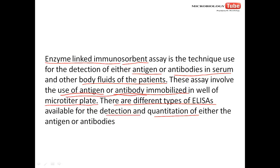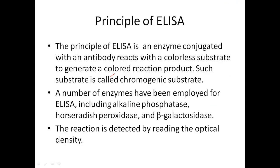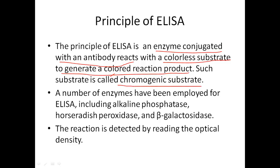There are various types of ELISA, but all have one specific goal: the detection and quantification of antigen or antibody. The principle of ELISA is that an enzyme conjugated with an antibody reacts with a colorless substrate to generate a color reaction. Such a substrate is called the chromogenic substrate.